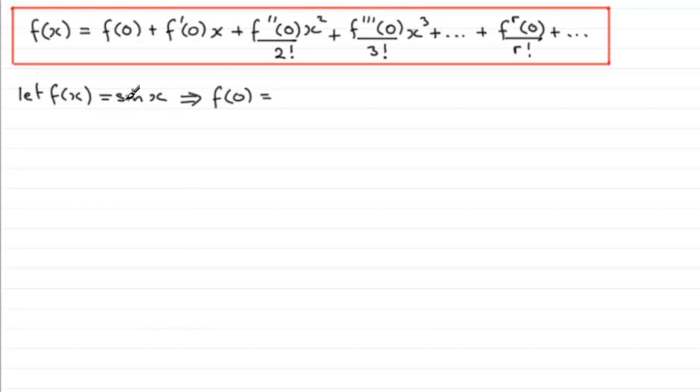The sine of 0 is 0. Next we need to differentiate f(x) to get the first differential, so we've got f'(x) equals cosine x. If we differentiate sine x, we're going to get cosine x. Substitute x is 0 into here, and it follows that the first differential when we substitute x is 0 in gives us the cosine of 0, which is 1.